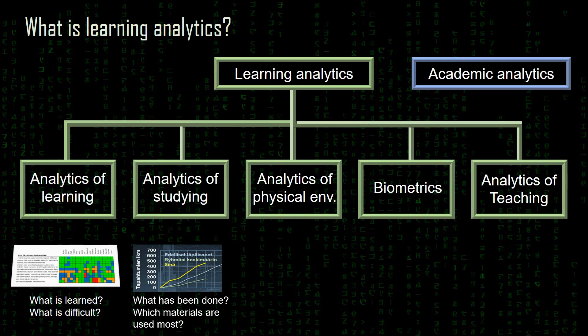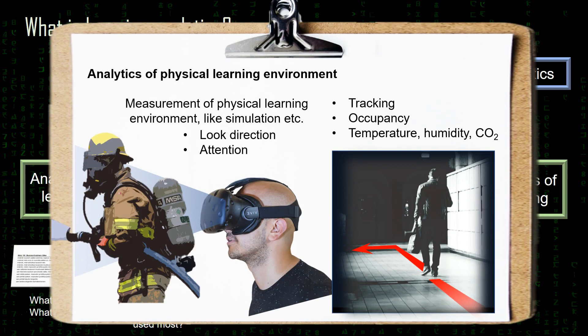Then analytics of physical environments. This can be simple quantities like temperature, humidity, or carbon dioxide levels in the classroom, or the occupancy of different spaces in the university campus area, or tracking people moving around campus. In physical simulation, for example in healthcare, it could be measurement of student attention — where do students look during the simulation or exercise, where do they pay attention — anything measured in a physical learning environment.